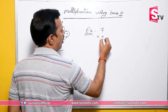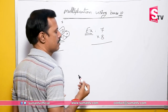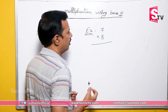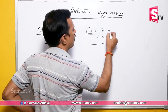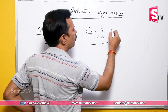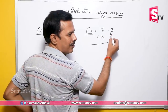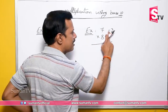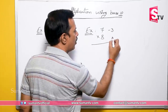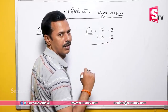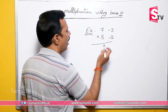7 into 8 — same method, using base 10. 7 is 3 less than 10, so minus 3. And 8 is 2 less than 10. Diagonal: 7 minus 2 equals 5. And 3 times 2 equals 6. So 7 times 8 equals 56. Simple!